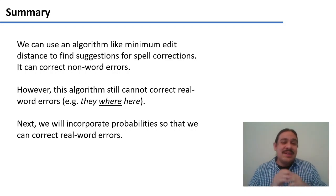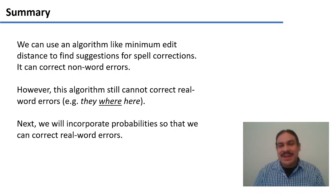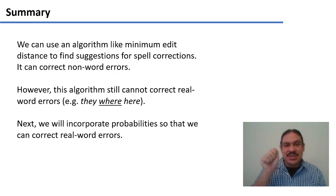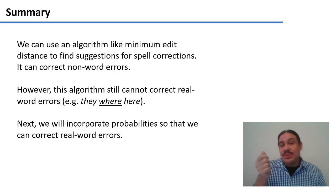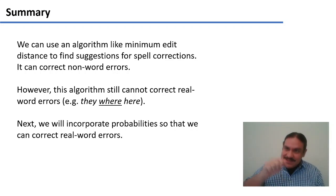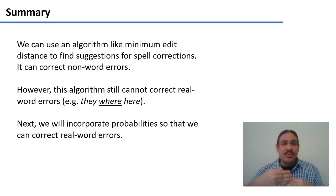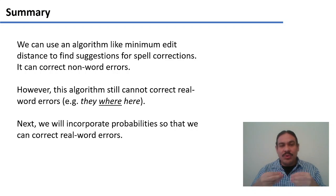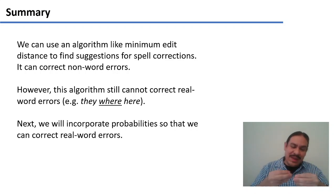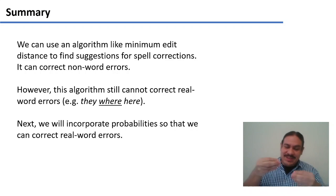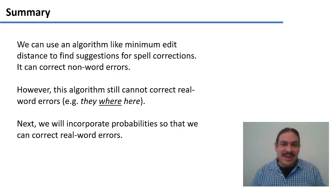This algorithm, however, cannot correct real-word errors. If you get something like 'they were here' where 'were' is spelled w-h-e-r-e, the computer will say there is a word 'where' in the dictionary — that's fine — and will not see it as a potential error. In our next video, we'll incorporate probabilities into our calculations so that we can find real-word errors and find that the collocation 'they where' with an h is unusual, and that it should be replaced with the more usual collocation 'they were' without an h.